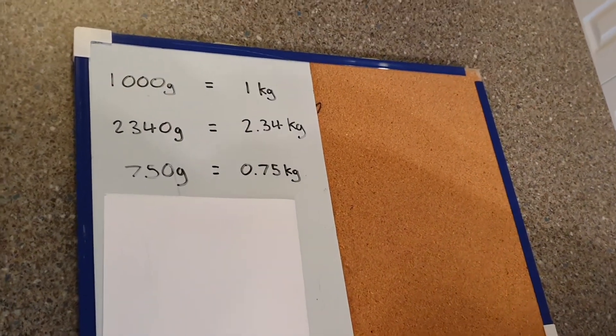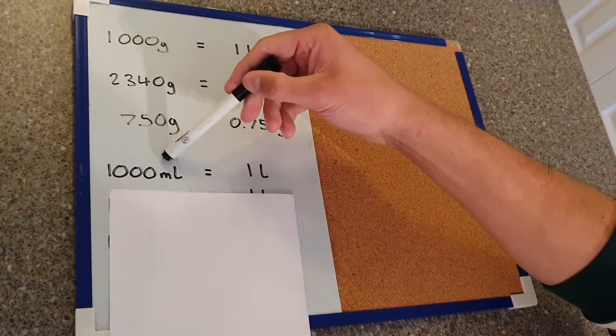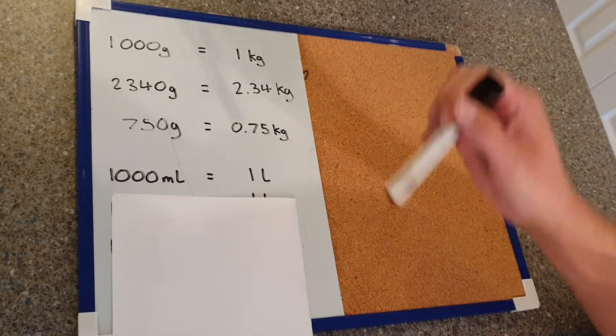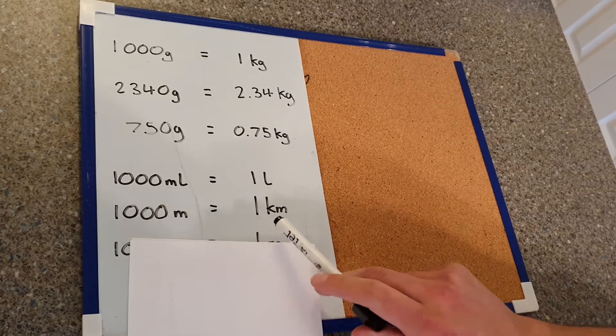So this is the same for capacity. A thousand millilitres is equal to one litre and then there's a thousand metres in one kilometre.